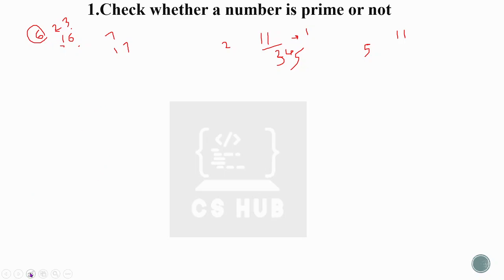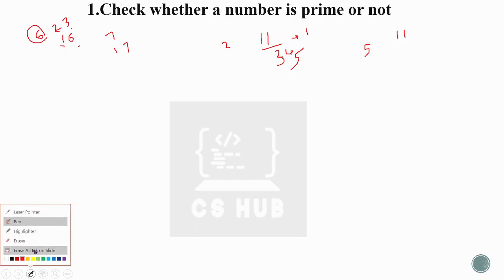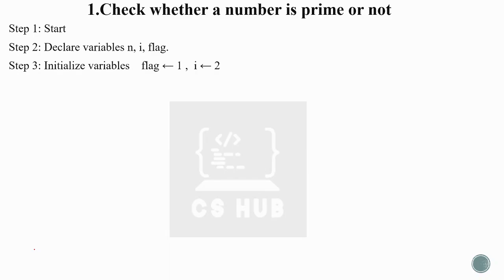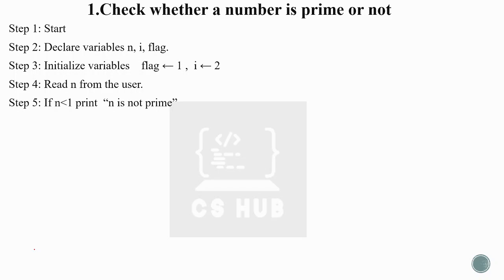This is our logic: we divide the number and check the remainder. If any remainder is zero when dividing by a factor, then the number is not prime. We check the number n. If n is less than 1, we can directly say that the number is not prime.